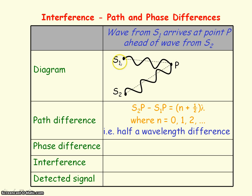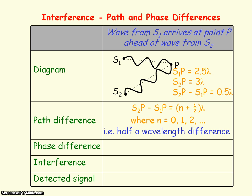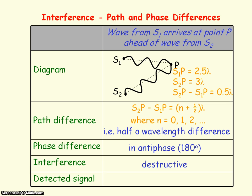For this diagram, the waves from S1 have travelled two and a half wavelengths to get to P, so the path difference is half a wavelength. That means there's a half wave cycle difference between them, so the waves meet in antiphase — a phase difference of 180 degrees. Since 180 degrees is half a circle and 360 degrees is a full circle, half a cycle difference is 180 degrees. When waves meet in antiphase, destructive interference occurs and a minimum signal is detected.